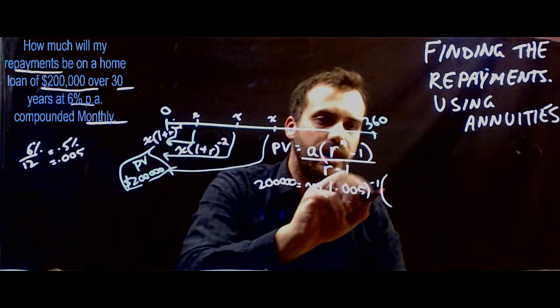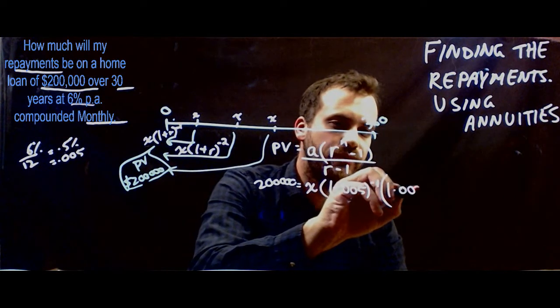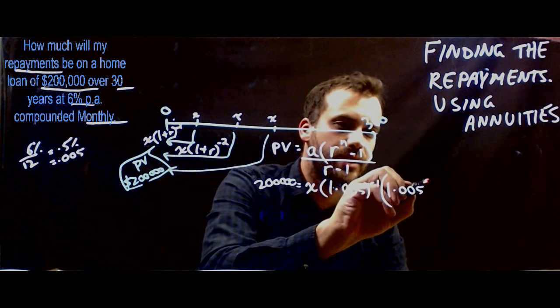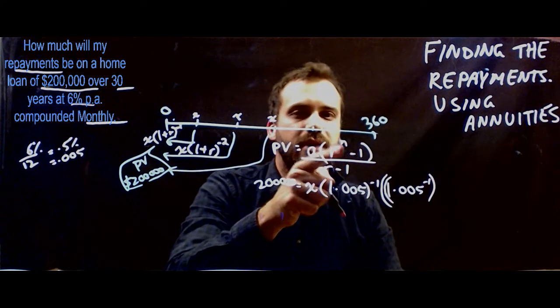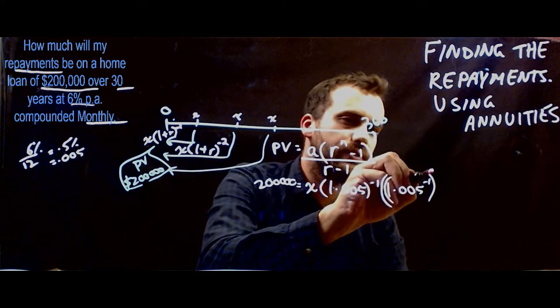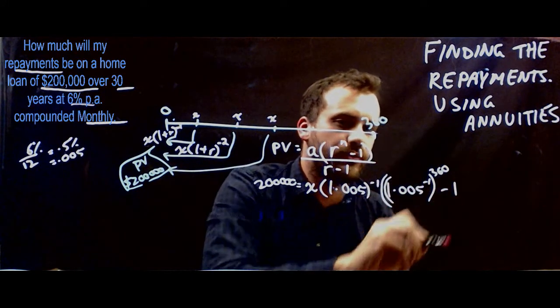Times R, which is 1.005 to the negative 1. And then raise that whole thing to the power of N, which is 360. And subtract 1 from that.